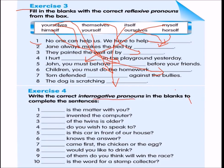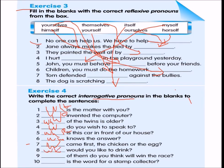Exercise 4: Write the correct interrogative pronouns in the blanks. 'What is the matter with you?' 'Who invented the computer?' 'Which of the twins is older?' 'Whom do you prefer to speak to?' 'Whose is this car in front of our house?' 'Who knows the answer?' 'Who came first — the chicken or the egg?' 'What would you like to drink?' 'Which of them do you think will win the race?' 'What is the word for stamp collector?'